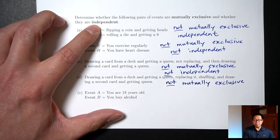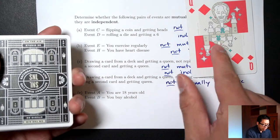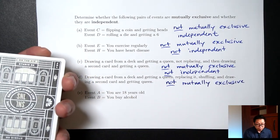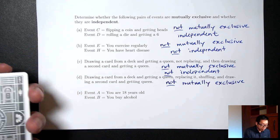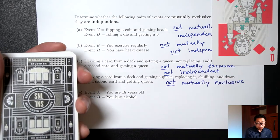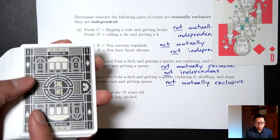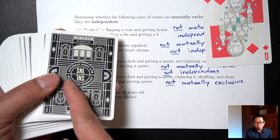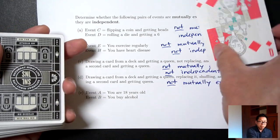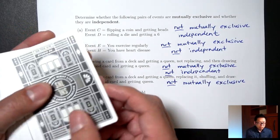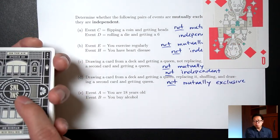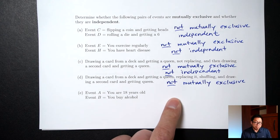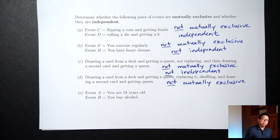Are these two things independent? If I know I got a queen on the first draw but this time I put it back and reshuffle, would that affect whether I get a queen on the second draw? This differs from Part C — in Part C we didn't put it back, which changes the probability of getting a second queen. But in Part D, where I'm putting it back and reshuffling, I'm resetting the situation. It doesn't matter what I get on the first draw because I'm always going to have four queens to choose from for the second draw. So because it doesn't affect the second draw, they are independent.